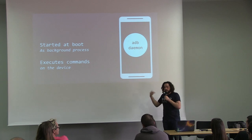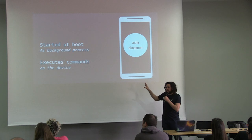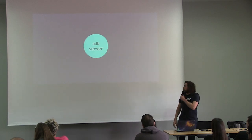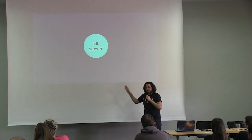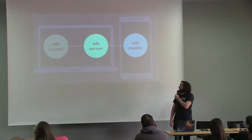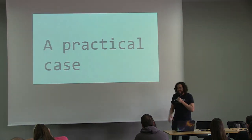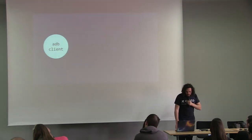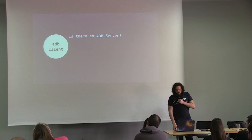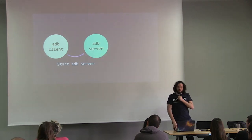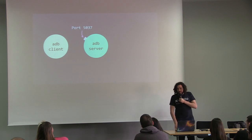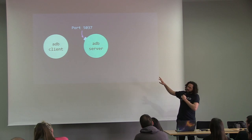The daemon's role is to execute the commands you ask directly on the device. The third element is the ADB server, which is the real bridge of the Android Debug Bridge — it links the ADB daemon and the ADB client. In a practical case, when you use your ADB client, it will check if there is an ADB server. If there is not, it will launch one. What the ADB server does is open a TCP server on port 5037.